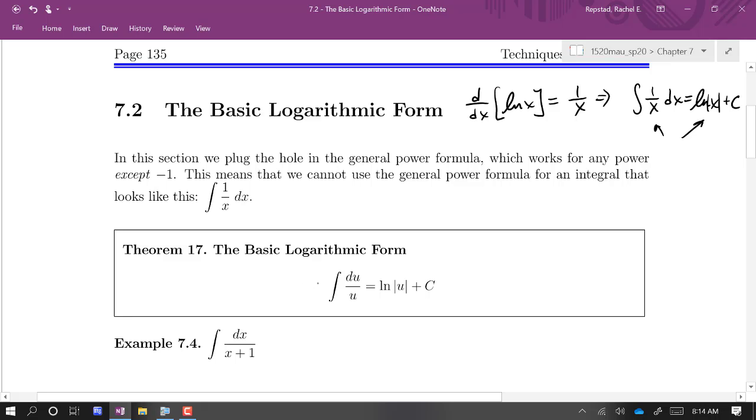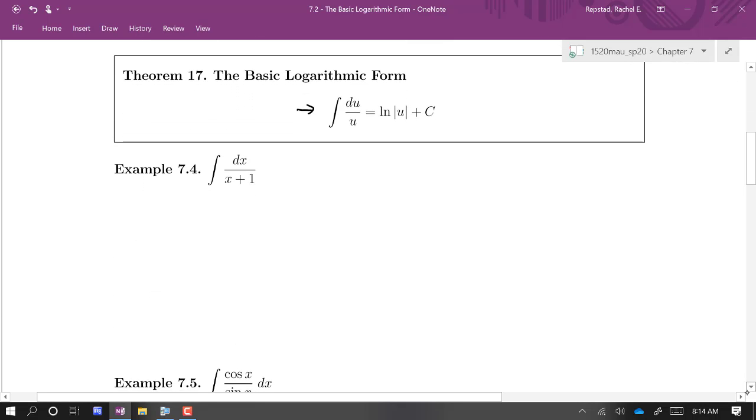And so that gives us this basic logarithmic form. This is for when the power is negative 1. And the basic log form looks like this: the integral of du over u, or which you could write as 1 over u du, is ln of absolute u plus a constant. So essentially, I recognize the log form as being if I'm looking at a fraction and what I have sitting on top is the derivative of what's on the bottom, then I can use the log form.